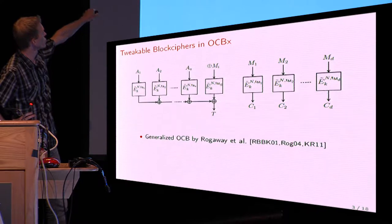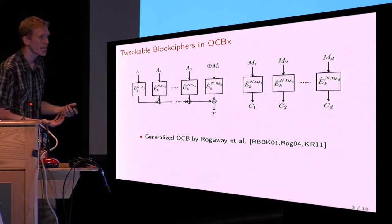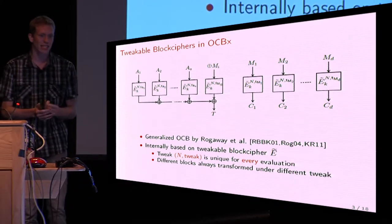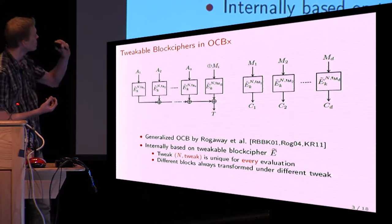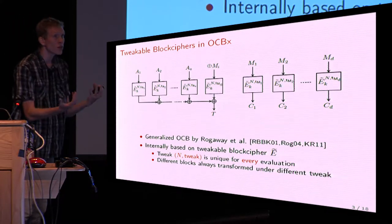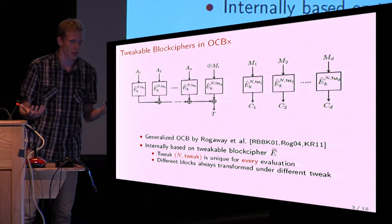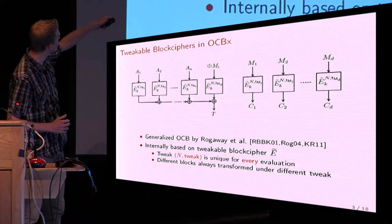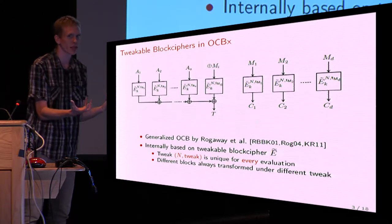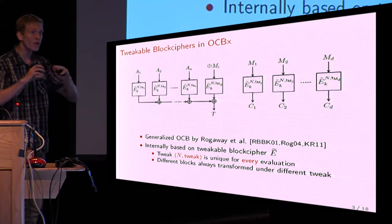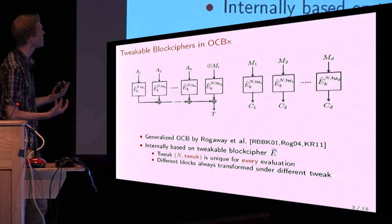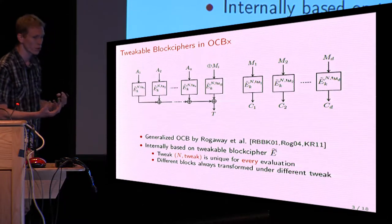The tweakable block cipher gets as input the key, and in addition a tweak consisting of a nonce N, which is a unique value for every evaluation, and a tweak identifier which identifies at which position in the scheme the tweakable block cipher is evaluated. This means that if you have two different evaluations of the scheme, the nonce will be different. And if you look at the same evaluation, two different block cipher calls occur at different positions, so they have a different tweak — making every evaluation of the tweakable block cipher essentially independent. That's how the OCB scheme is generically proven secure.